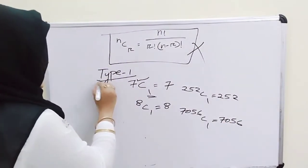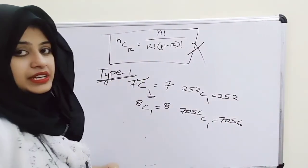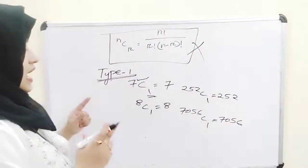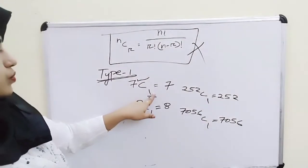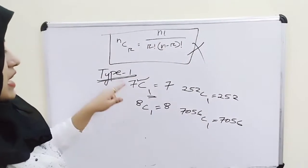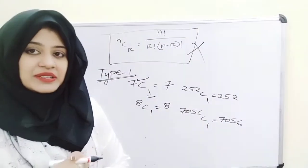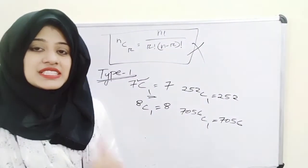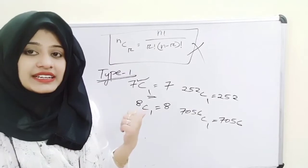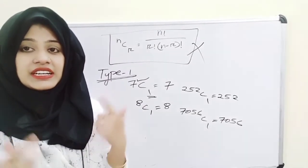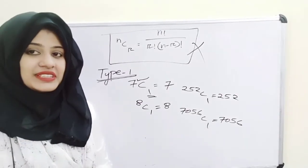Type 1 rule: if r is 1, then the answer will be n. That is the Type 1 trick. Now let's see the Type 2 trick.